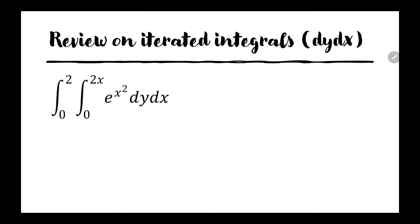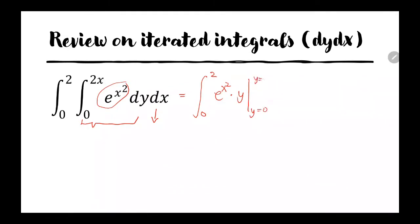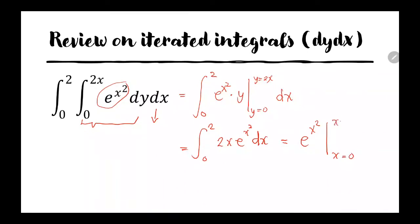Let us have a quick review on solving iterated integrals of different orders of integration. This example is a double integral with order dy dx, meaning you have to solve first with respect to y, then with respect to x. As you are first solving with respect to y, the x term will be deemed constant, so it remains the same. Then we have e raised to x squared times y, evaluated from 0 to 2x. Now you have the integral from 0 to 2 of 2x e raised to x squared dx, which evaluates to e raised to x squared where x goes from 0 to 2, giving e raised to 4 minus e raised to 0, or e raised to 4 minus 1.